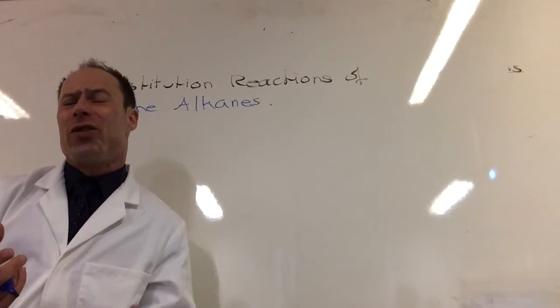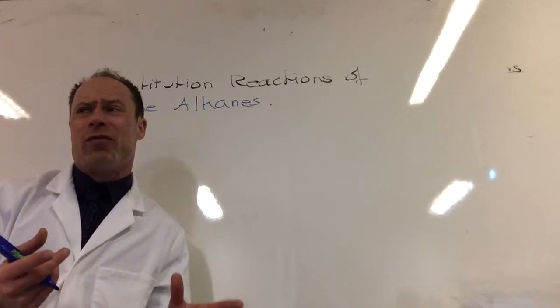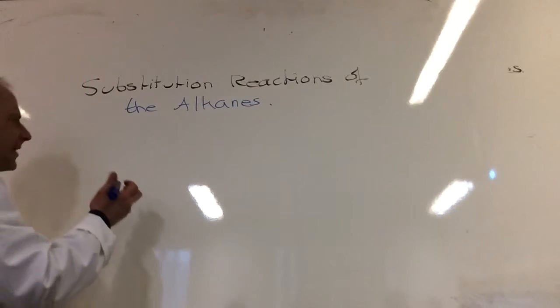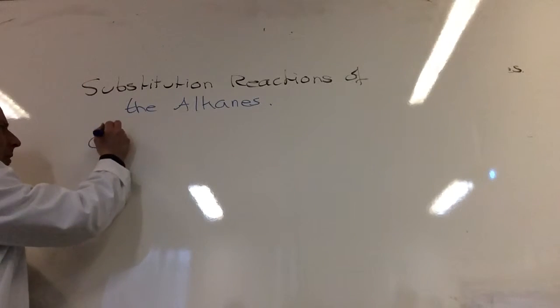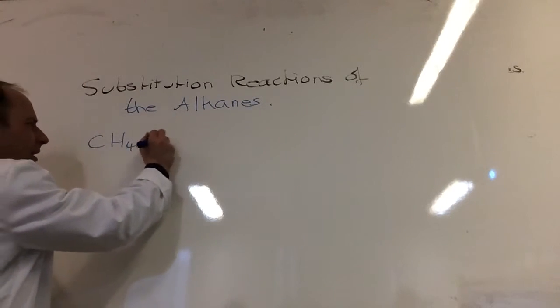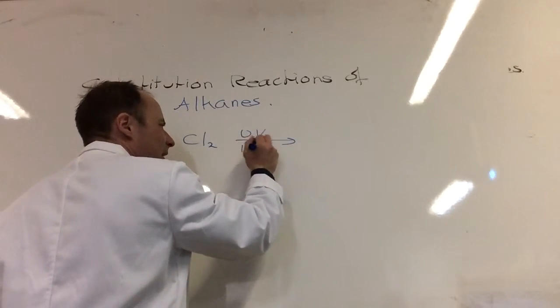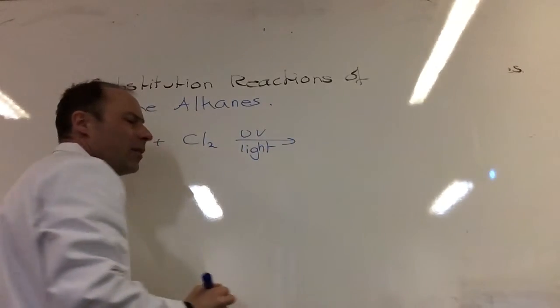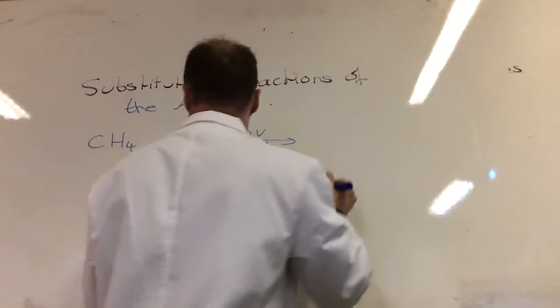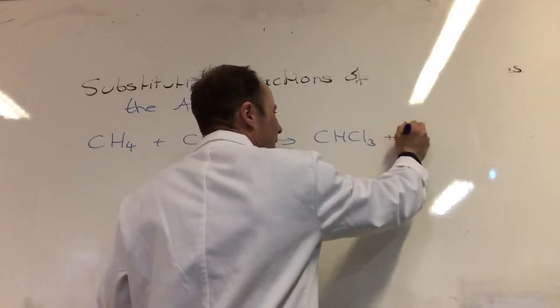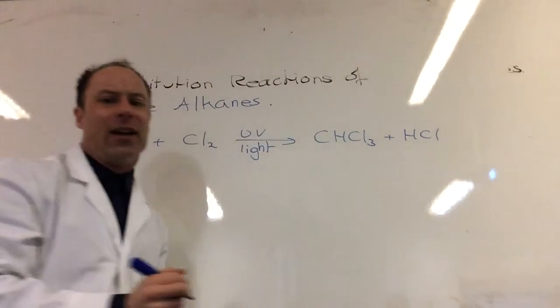The one thing they do do is they undergo substitution reactions with the halogens. So we're going to do the simplest one. If I take methane and I react it with chlorine gas in the presence of UV light, and often you can just do this in sunlight, you make CH3Cl plus HCl.